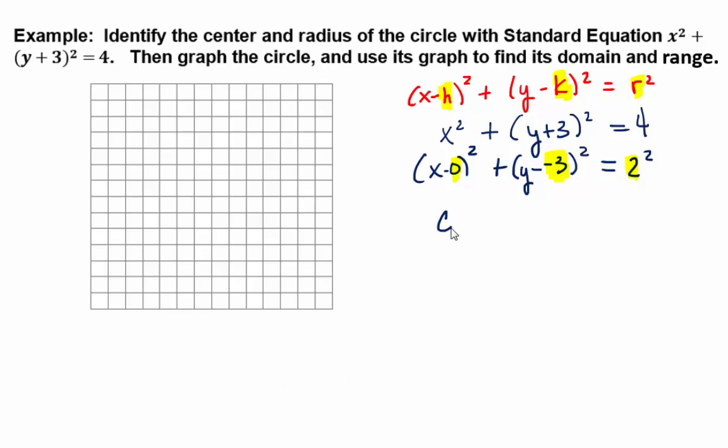All right, so what would the center of this particular circle be? 0, negative 3. Very good. The h is the x-coordinate of the center. That's your h. The k is your y-coordinate of the center.